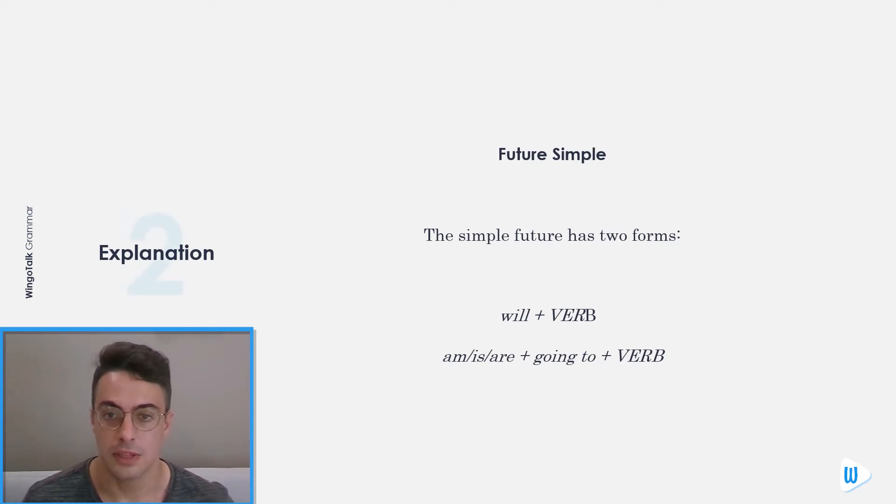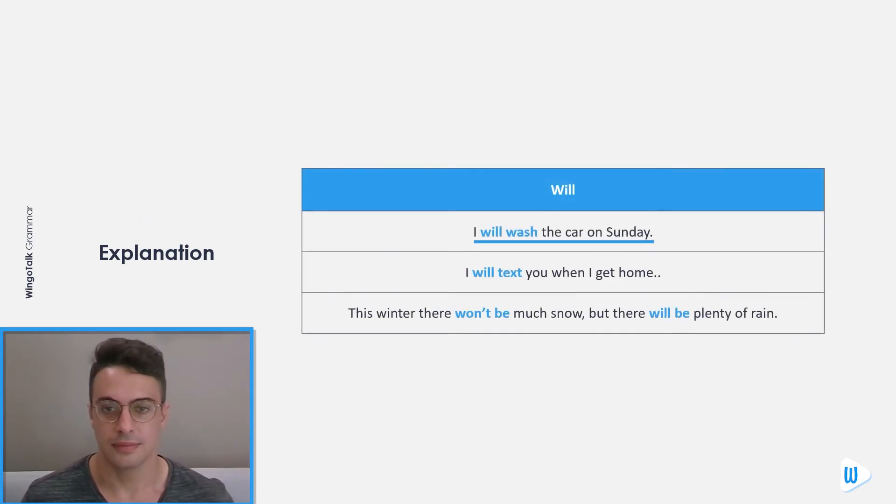Future Simple: The simple future has two forms. Will plus verb, am/is/are plus going to plus verb. Examples with will: I will wash the car on Sunday. I will text you when I get home. This winter there won't be much snow, but there will be plenty of rain.